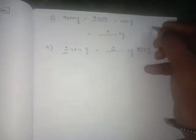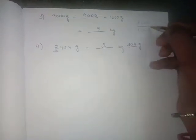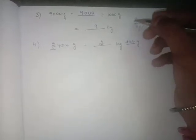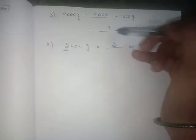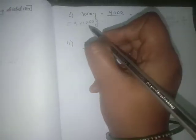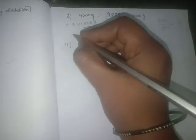Nine thousand divided by one thousand — cancel the zeros: three zeros from nine thousand cancel with three zeros from one thousand, leaving nine over one. Denominator one has no value, so the answer is just nine. Therefore nine thousand grams divided by one thousand equals nine kilograms. Another method: write nine thousand grams as nine into one thousand grams. Every one thousand grams equals one kilogram, so the answer is nine kilograms. Both methods give the same result.